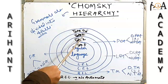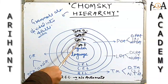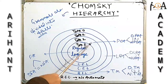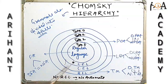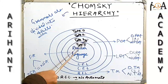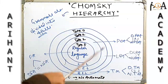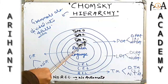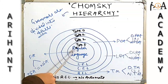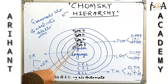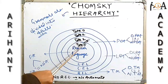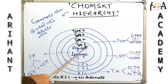So basically, grammars are of four types: Type 0, Type 1, Type 2, and Type 3. Now let's see in detail about Type 0, Type 1, Type 2, and Type 3 — their formulation, structure, how they are recognized, and what types are associated with each.